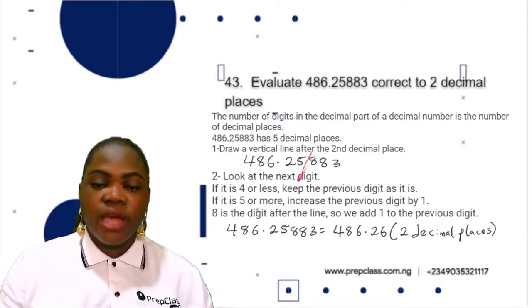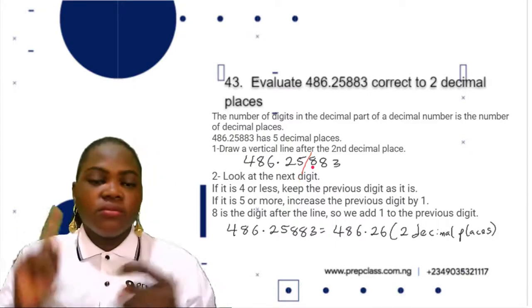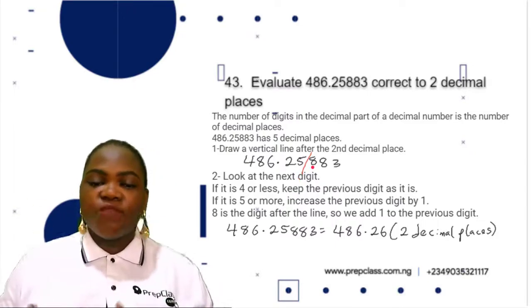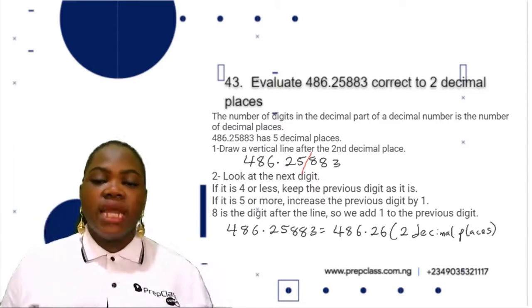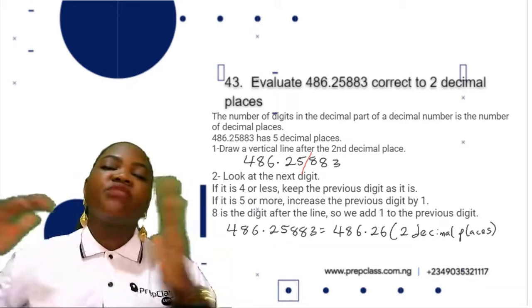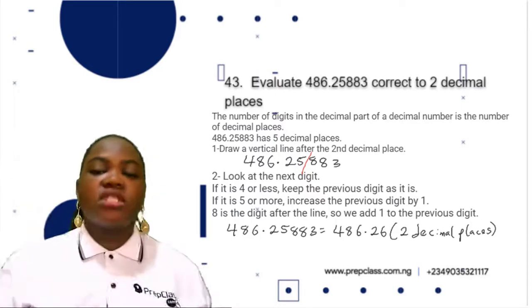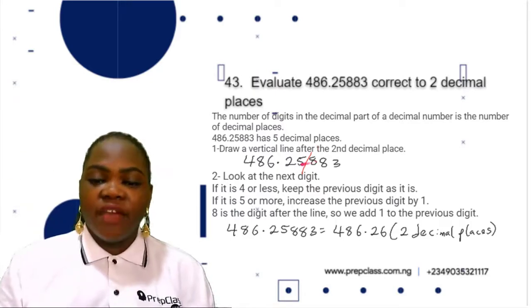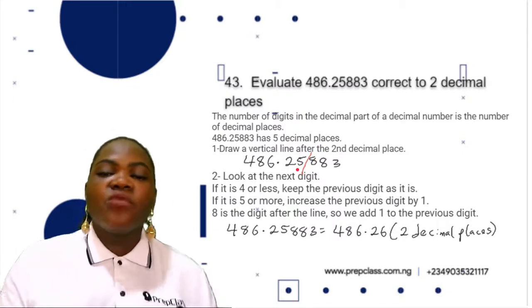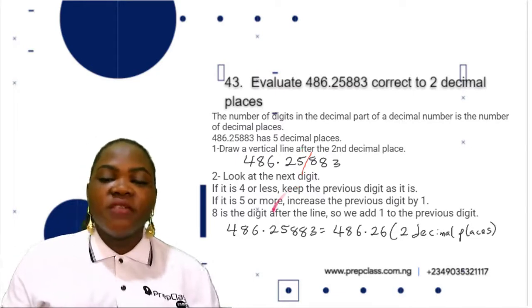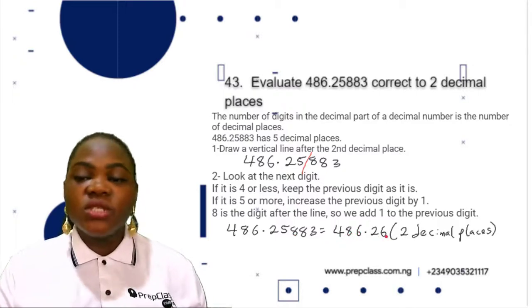The next digit is 8. If it is four or less, keep the previous digit as it is. But if it is five or more, increase the previous digit by one. Eight is the digit after the line, so we add one to 5, giving 6. This means 486.25883 is 486.26 correct to two decimal places. The correct option is option C, 486.26.